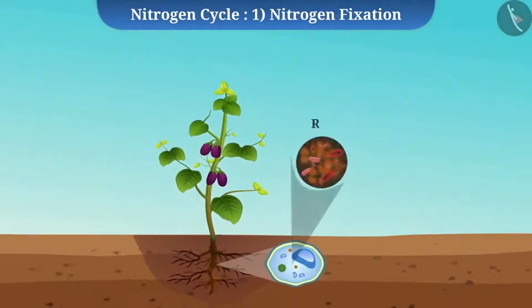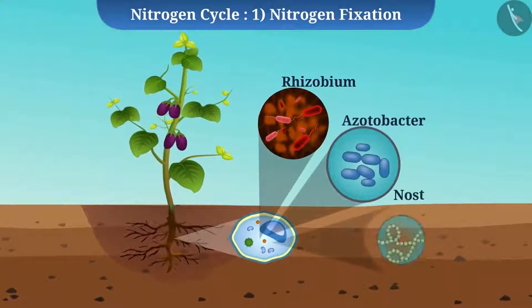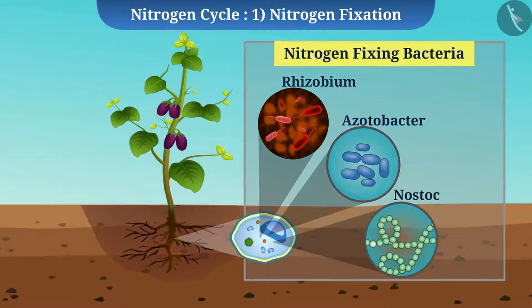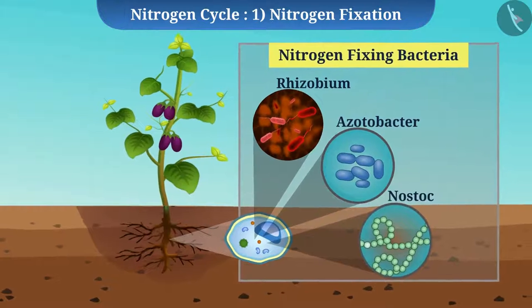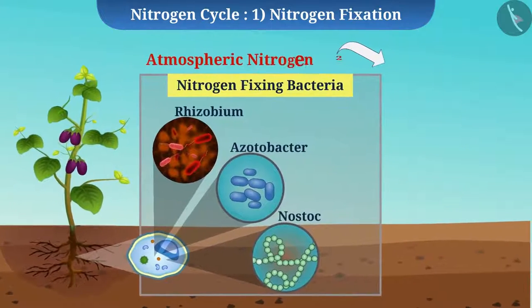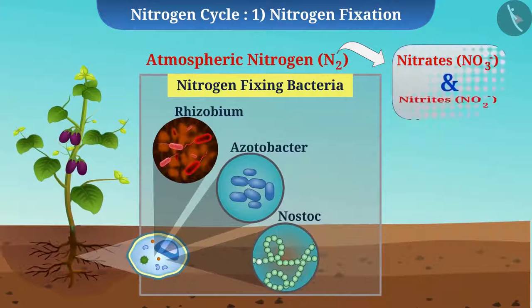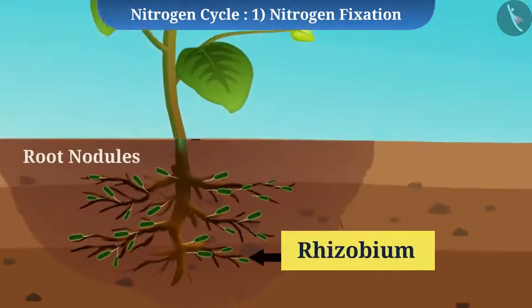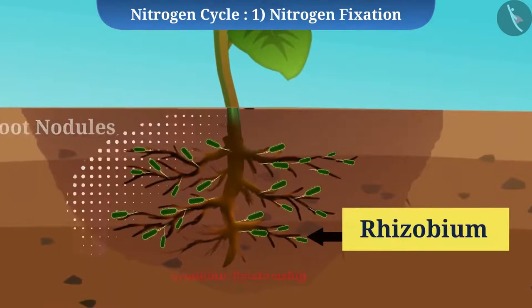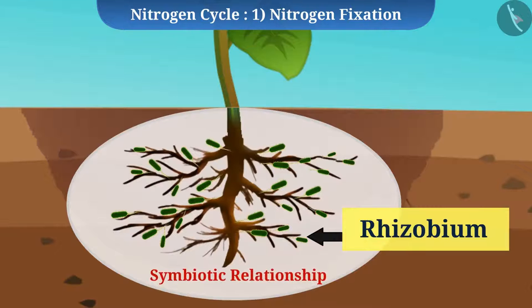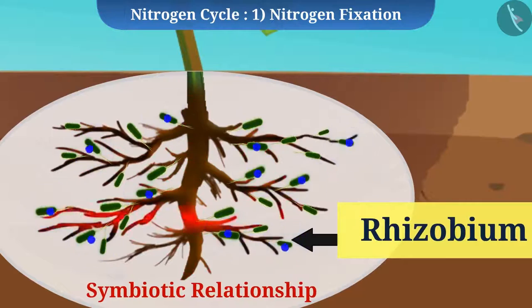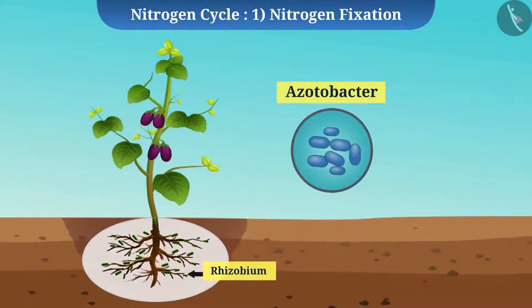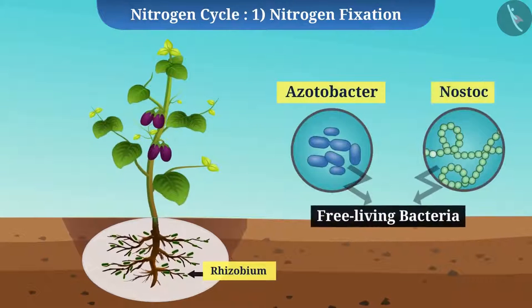Certain bacteria such as Rhizobium, Azotobacter, and Nostoc are called nitrogen-fixing bacteria because they are able to convert atmospheric nitrogen to nitrites and nitrates. Bacteria such as Rhizobium live in root nodules of leguminous plants and maintain a symbiotic relationship with the plants — meaning both organisms benefit from each other. Bacteria such as Azotobacter and Nostoc are free-living bacteria.